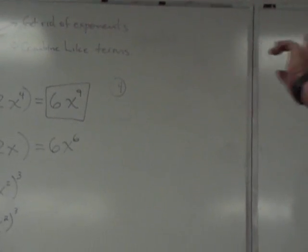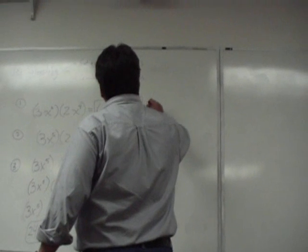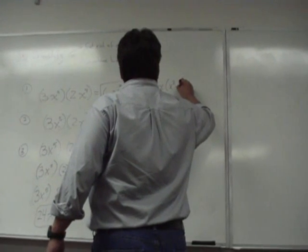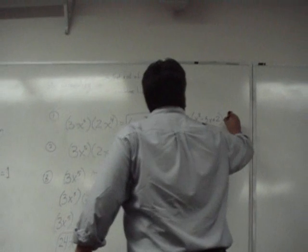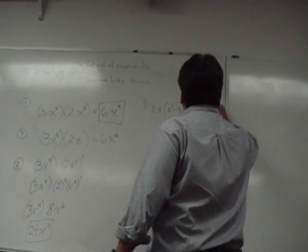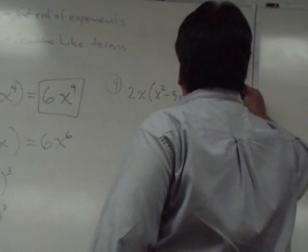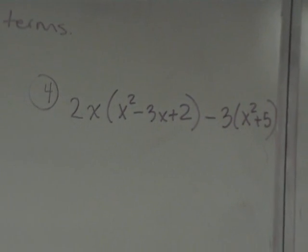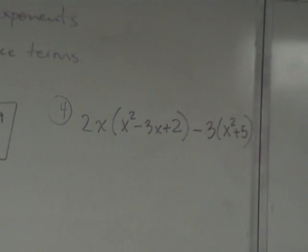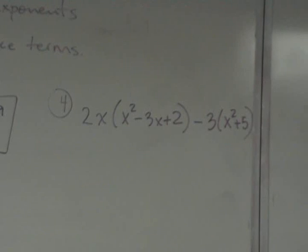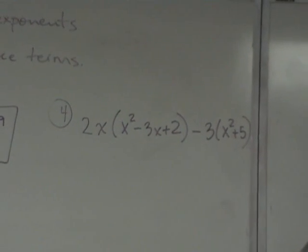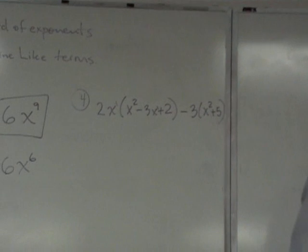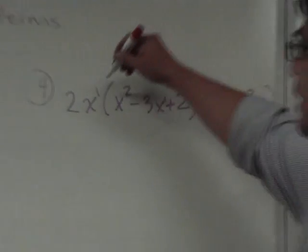Now let's do a slightly more interesting problem. All of these have worked with monomials. Now let's see what you think you would do for a problem like this: 2x times x squared minus 3x plus 2, minus 3 times x squared plus 5. Let's say that I give you this problem and I ask you to simplify it. There's no harm in you putting a 1 here and a 1 right here so that you know those are the exponents on x.